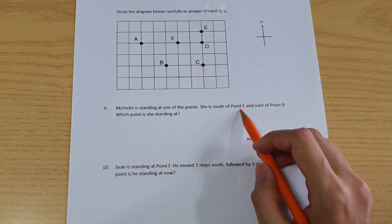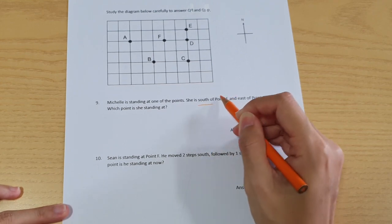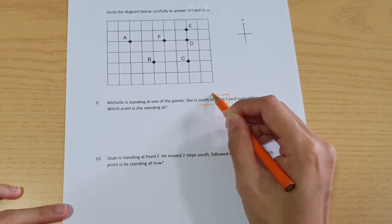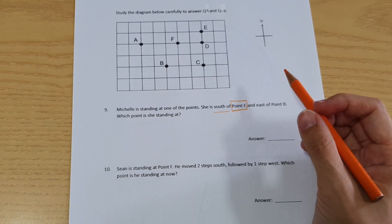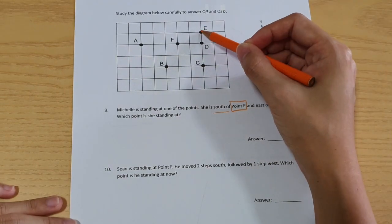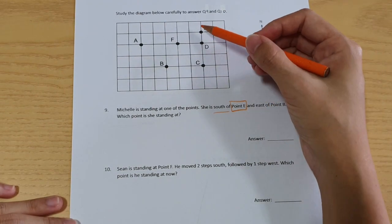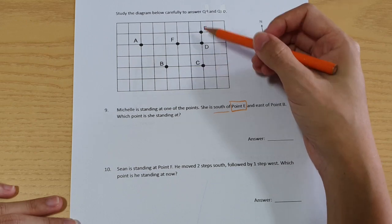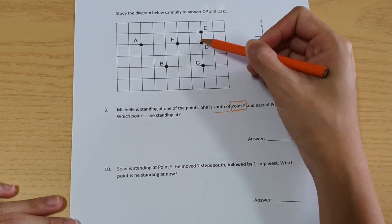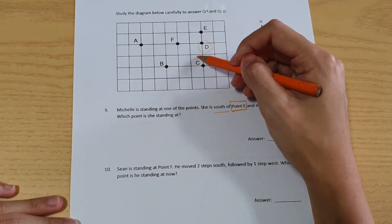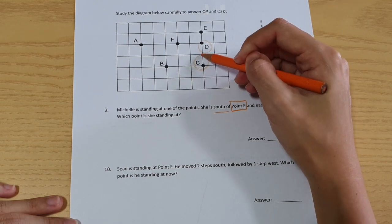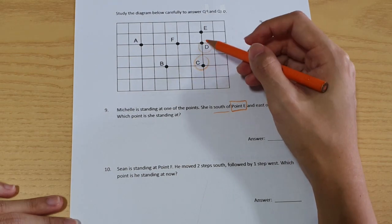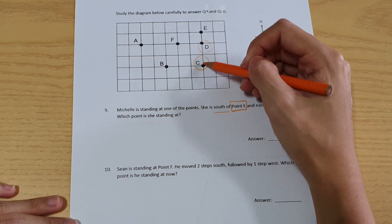South of point E. This means when I am standing at E and I look at Michelle, I'm looking at the south and I'll see Michelle. This can be Michelle or this can be Michelle, because they are both south of point E.